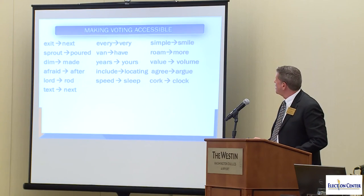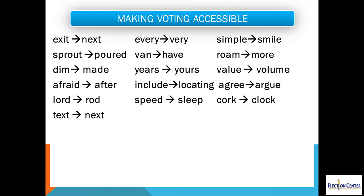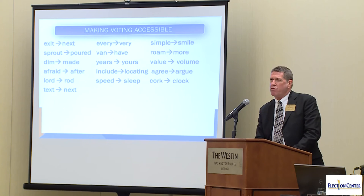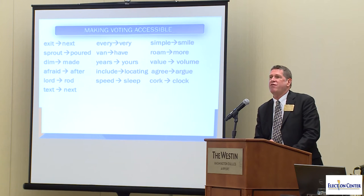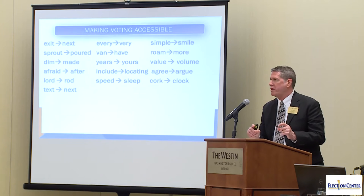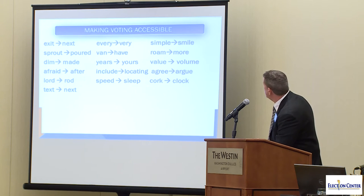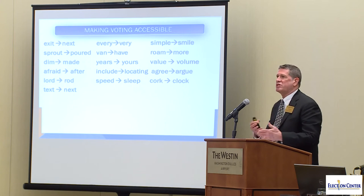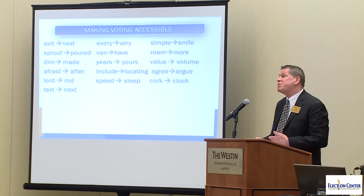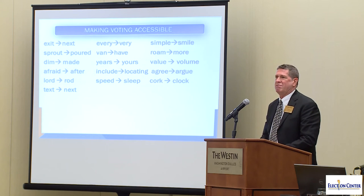These are some examples of what we call whole word errors, where a person looks at a word and a low-literacy reader sees it differently because they're trying to figure it out as a whole word rather than pronouncing it. So the word "exit" they see as "next," the word "include" they see as "locating," "agree" they see as "argue," "roam" they see as "more." The difference between the meaning of the word and what they're seeing can be quite substantial — it's called a whole word error.